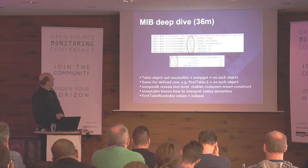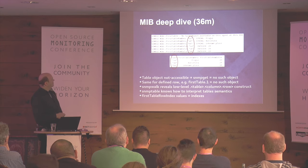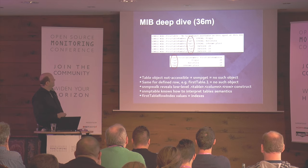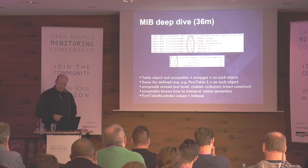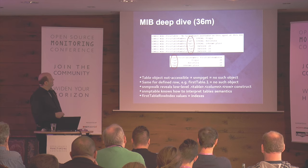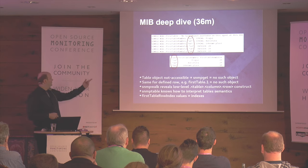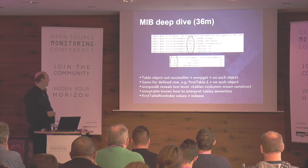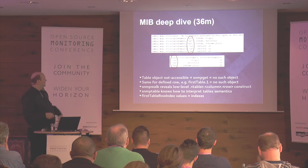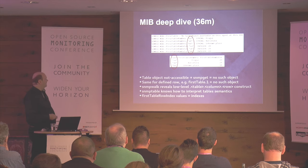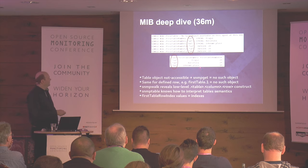This is SNMP walk output. If I try to access firstTable itself — no such object available, because we declared it as not-accessible. Then we can see the use of the index column. This is what we intended to realize. The SNMP walk output maps to this SNMP table output. SNMP walk reveals the raw label structure, while SNMP table knows how to interpret these table semantics — that's why you get the nice formatted output.